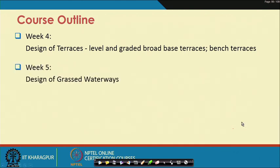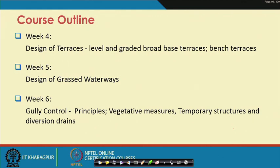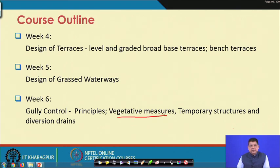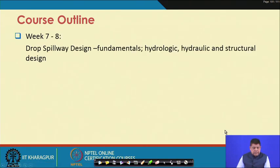In Week 5 we will go to design of grass waterways — basically channels where grasses are planted or vegetation has grown which can be used for carrying water safely to any outlet. Week 6 will cover gully control, including the principles behind gully control. We will see vegetative measures for controlling gully and also temporary structures and diversion drains used for gully control.